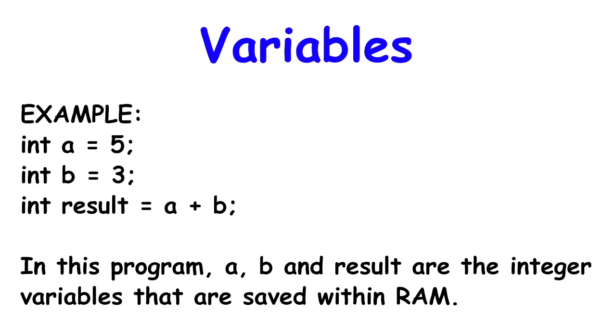For example, int a equals 5, int b equals 3, and int result equals a plus b. In this program, a, b, and result are the integer variables that are saved within RAM.